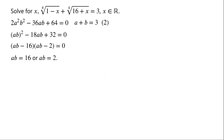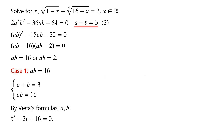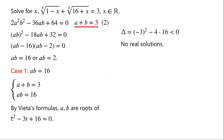So either ab equals 16, or ab equals 2. Case 1: ab equals 16. From equation 2, a plus b equals 3. By Vieta's formulas, a and b are roots of the quadratic t² minus 3t plus 16 equals 0. The discriminant equals (−3)² minus 4 times 16, which is less than 0. So the quadratic equation has no real solutions.